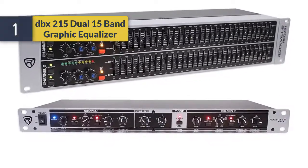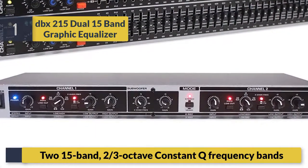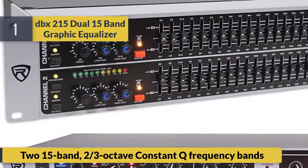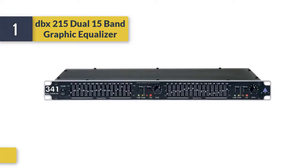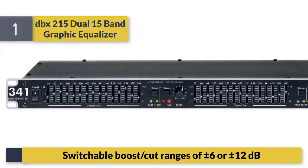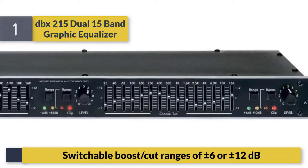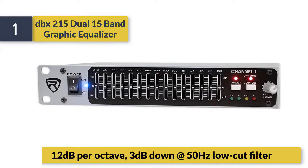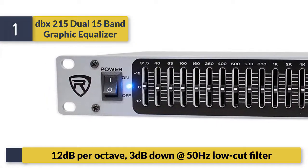Number one: DBX 215 dual 15-band graphic equalizer. Features two-thirds octave constant Q frequency bands, switchable boost/cut ranges of plus or minus 6 dB or plus or minus 12 dB, and a 12 dB per octave, 3 dB down at 50 Hz low-cut filter.